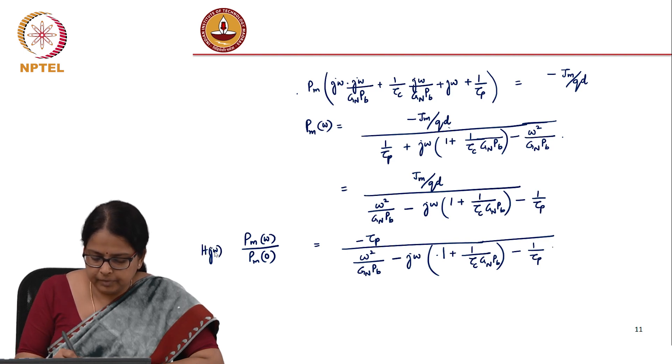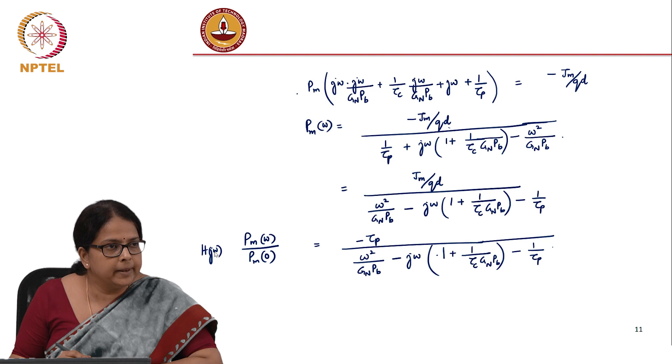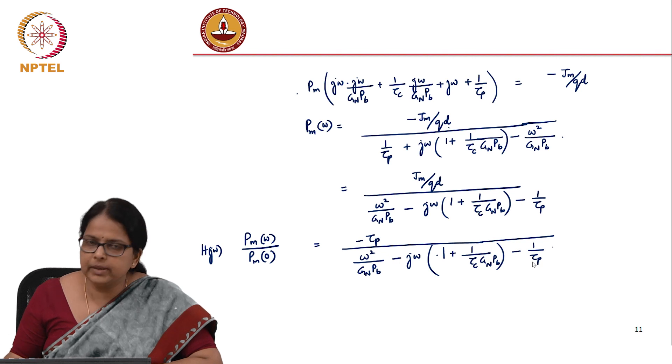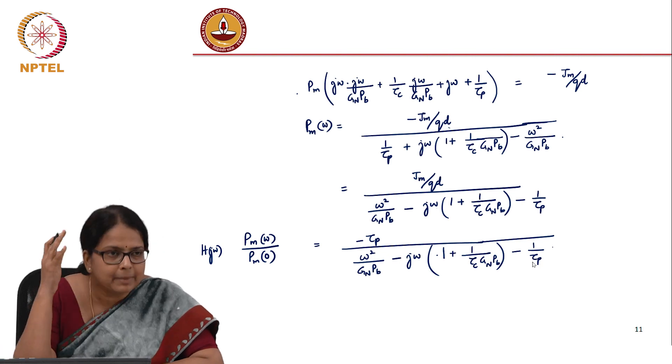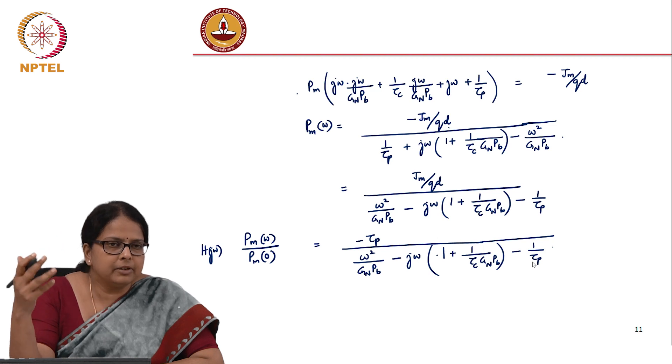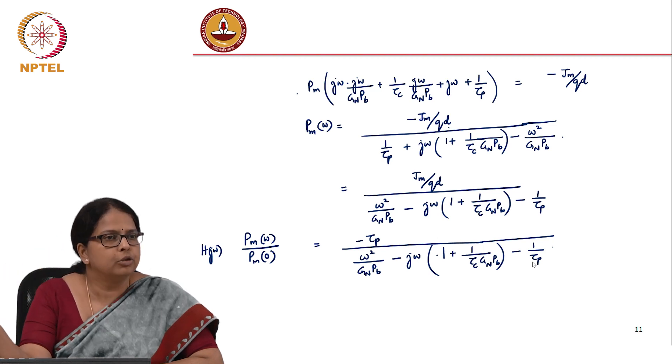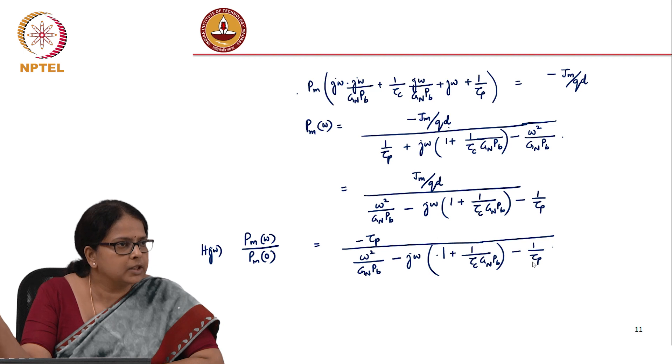This is h of j*omega. You could do the magnitude of h(j*omega). What happens at resonance? The response is maximum.